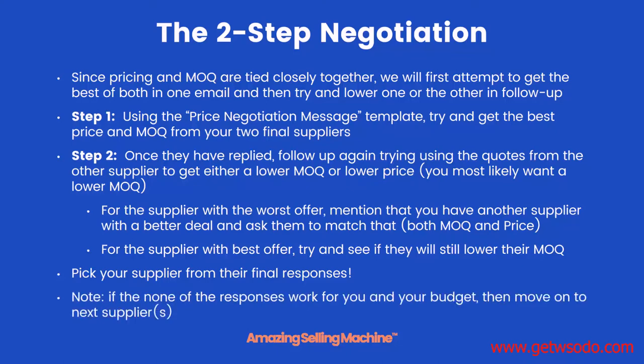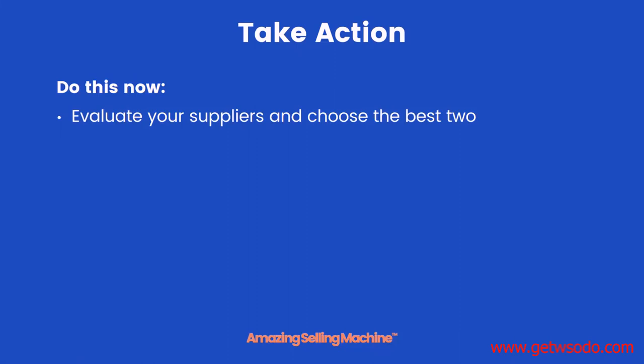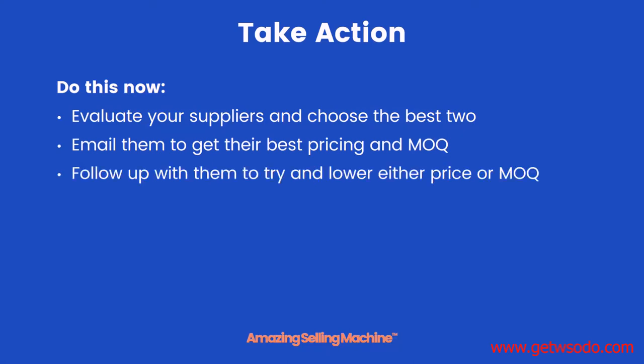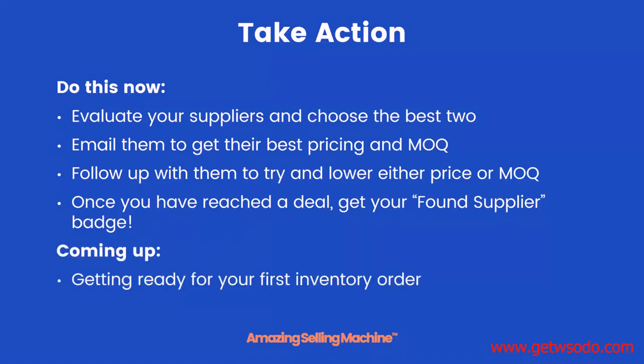Once they reply back, you're ready to pick your final supplier. Keep in mind that if none of the responses work out for you, simply move on to the next set of suppliers. Now it's time to take action: evaluate your suppliers, choose the best two, then email them to get their best pricing and MOQ. Once they've responded, follow up to try and get a lower price or lower MOQ. Once you've made your final decision and reached a deal, go get your 'Found Supplier' badge — and I'll see you in the very next lesson when we'll start getting ready for our first inventory order.